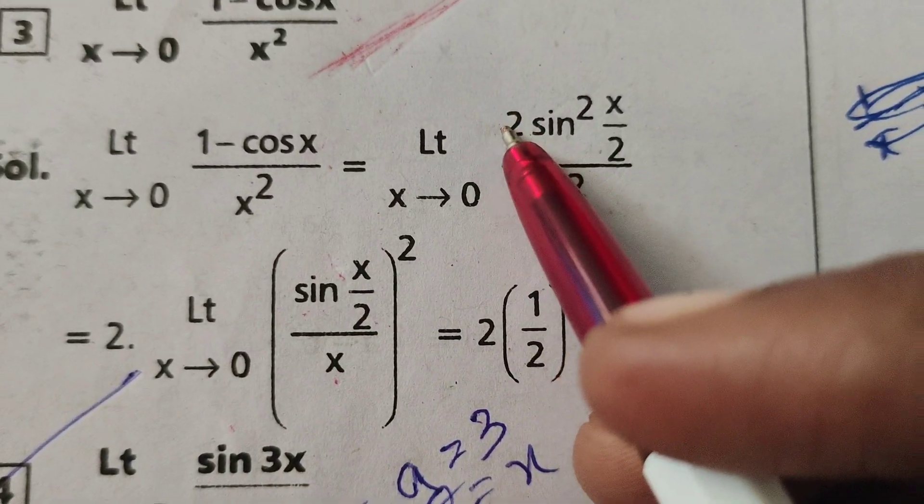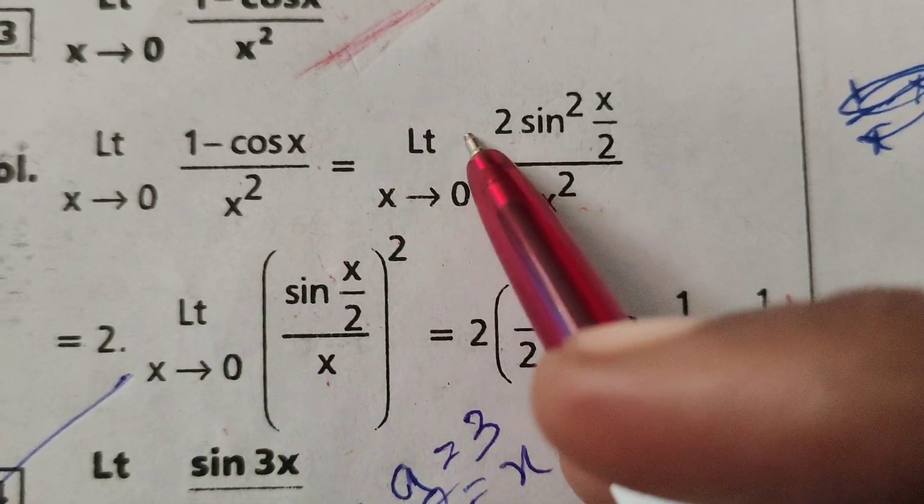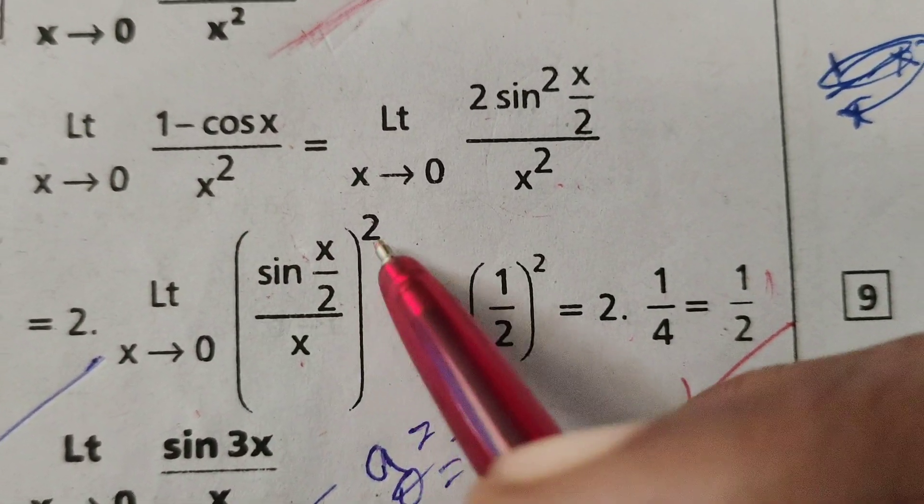Next, that here, 2 is the constant, 2 write before the limit. 2 into, limit x tends to 0, sin x by 2 by x whole square right here.